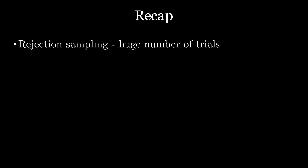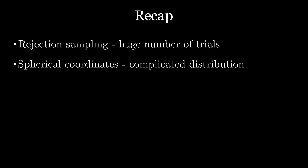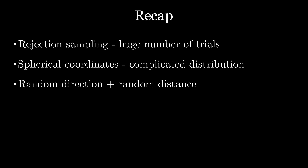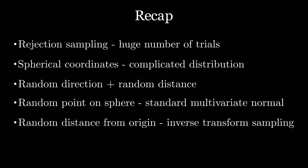To recap: we first tried rejection sampling to select random points in the unit ball. However, after simulation and a calculation of the volume of an n-dimensional ball, we discovered that the number of trials needed increases faster than exponentially as dimension increases. We then tried spherical coordinates but decided it was too difficult to determine the distribution of each variable. Instead, we turned to selecting a random direction and a random distance. We tried selecting points in a box and normalizing, but that did not yield a uniform distribution. To tackle this, we used a rotationally invariant distribution — the standard multivariate normal. The second task, choosing the distance, generalizes from the 2D case using the CDF and inverse transform sampling.